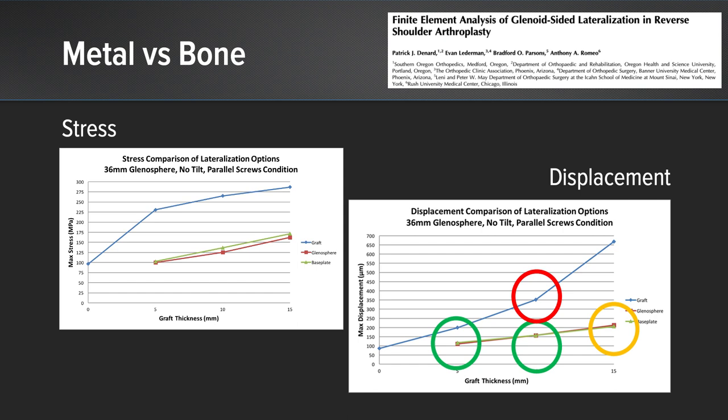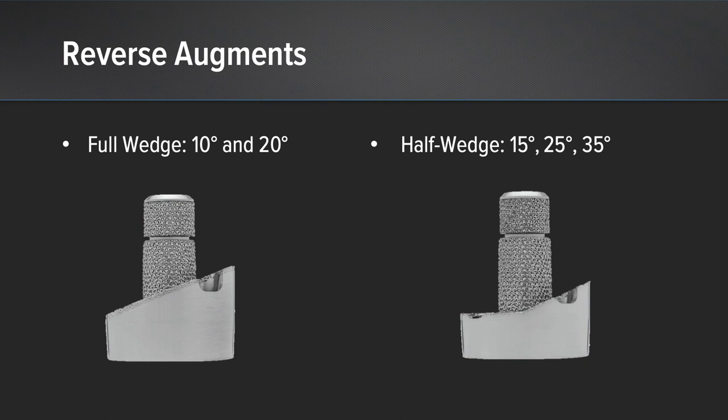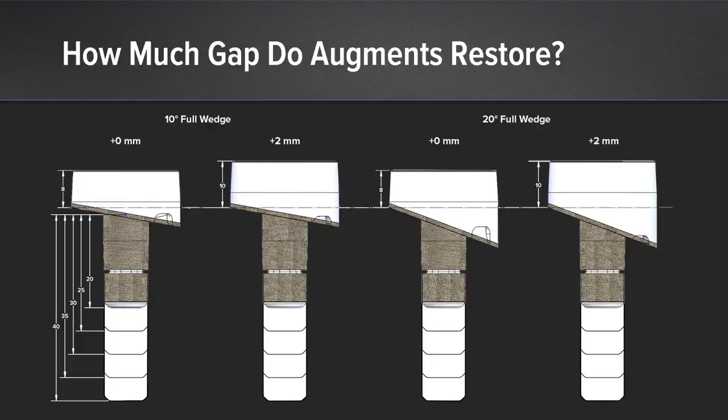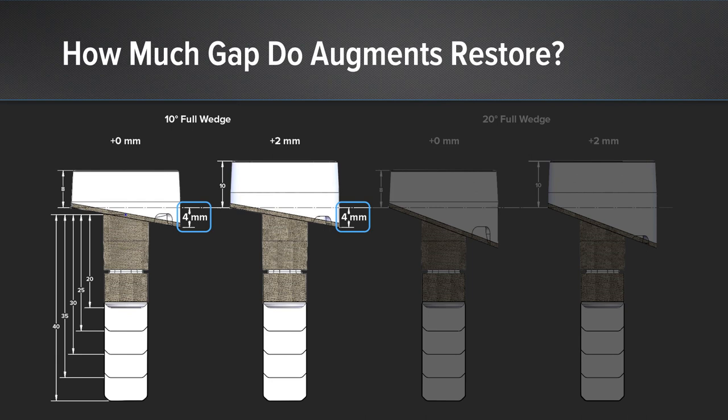With the reverse augmented system using the MGS, we have full wedges with 10 and 20 degrees of retroversion correction, and half wedges in 15, 25, or 35 degrees. In terms of how much gap the augments restore: with the 10-degree implant you get 4 mm additional posterior, with the 20-degree implant you get 8 mm additional posterior. With the half wedges, you have 3, 5, and 8 mm respectively. You can use these numbers in your VIP planning to decide which implant fits most appropriately.